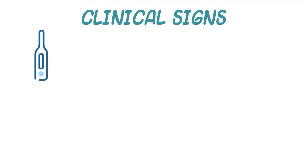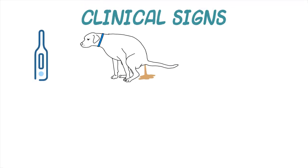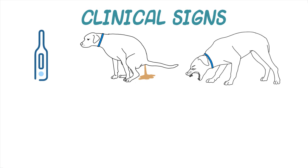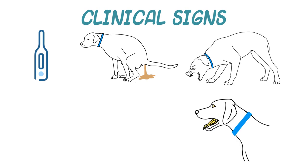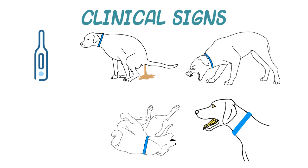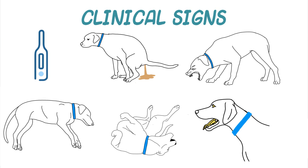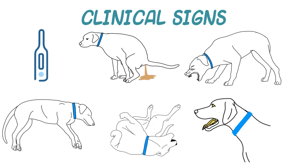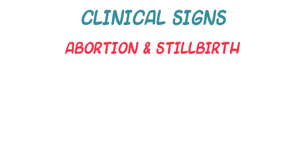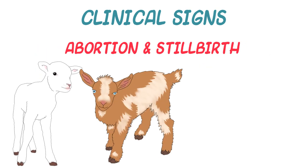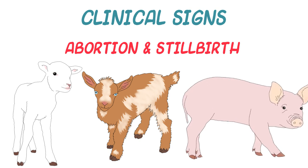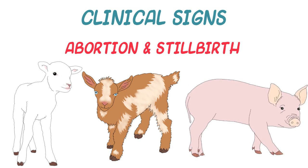Associated clinical signs include fever, diarrhea, cough, dyspnea, icterus, seizures, and death. Toxo can also cause abortion and stillbirth in sheep and goats, and sometimes in pigs. Tachyzoites may also spread to the fetus, causing multiple organ necrosis.